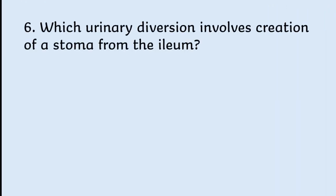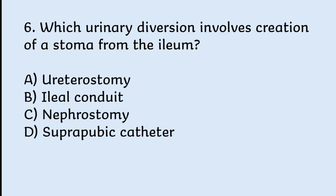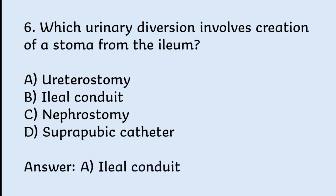Which urinary diversion involves creation of a stoma from the ileum? Options: urethrostomy, ileal conduit, nephrostomy, suprapubic catheter. Correct answer is ileal conduit.